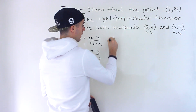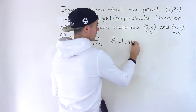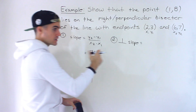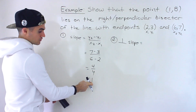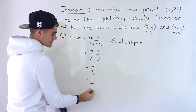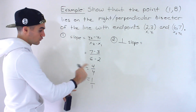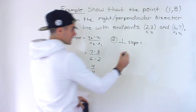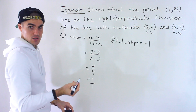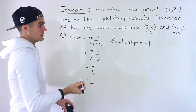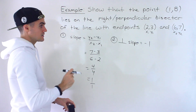So the slope of that line with those endpoints is 1. What is the perpendicular slope going to be? That's going to be the slope of the perpendicular bisector — we take the negative reciprocal. Notice 1 is like 1 over 1. The reciprocal is 1 over 1, but then we add a negative and change the sign. So the perpendicular slope is negative 1, and that's going to be the slope of the perpendicular bisector.